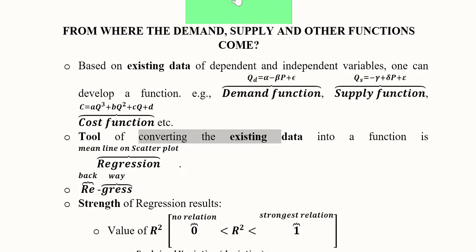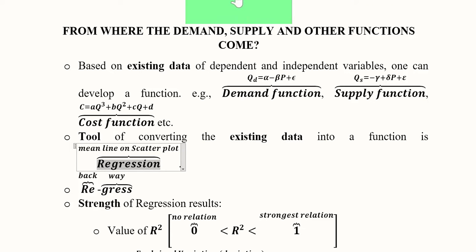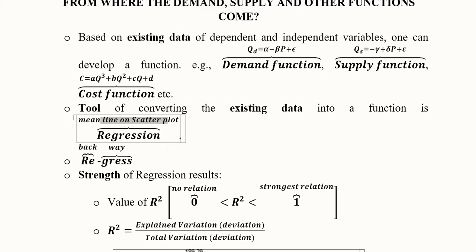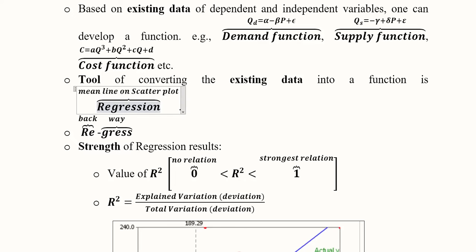The initial inquiry involves subjecting existing data to regression analysis. Regression is essentially the mean line on a scatter plot, showing the mean values developed from various observations of the dependent and independent variables. The word 'regression' is composed of two parts: the prefix meaning 'back' or 'repeat,' and 'gress' meaning 'the way' or 'the root' — so it is based on the previous track or route.